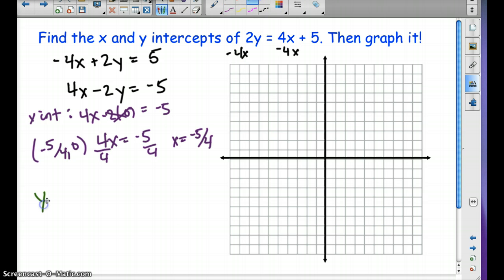And then the y-intercept is going to be, we'll plug in 0 for x. And we have negative 2y equals negative 5. So y equals 5 halves. So our y-intercept will be 0 comma 5 over 2.